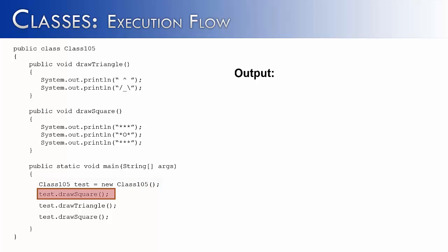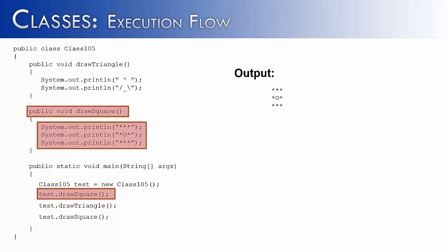We call the method using test.drawSquare. Notice it's able to find the method without a problem. The order of the method creation does not matter — you could have drawSquare first or drawTriangle first. It's looking for the name of the method, not where it's located inside of the class. Once the drawSquare method is invoked, we see a square drawn on the screen.